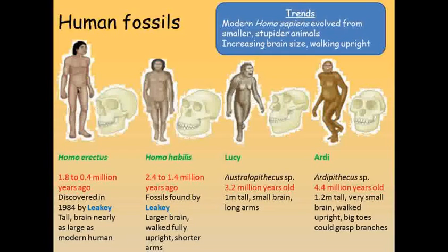These changes help us to understand how our ancient ancestors lived. We can explain the changes we've just identified by seeing our ancestors move out of the trees into the open grasslands, where walking upright was an advantage. The larger brain led to increased intelligence, which would have led to more complex social groups and an increased ability to hunt large animals as a source of protein.